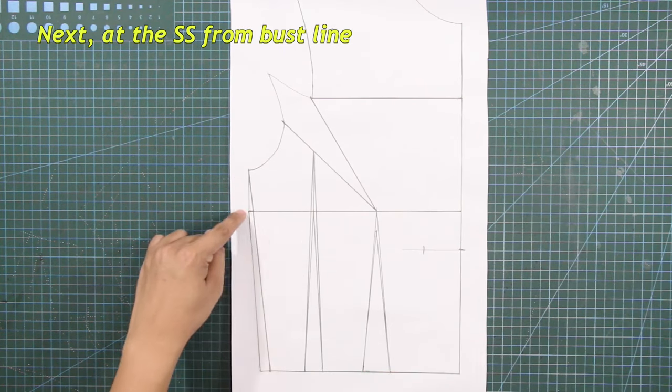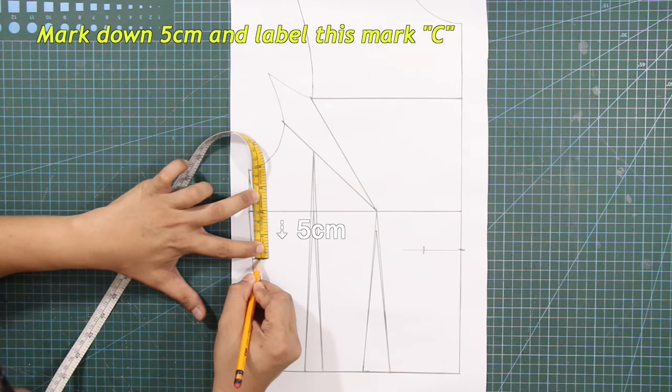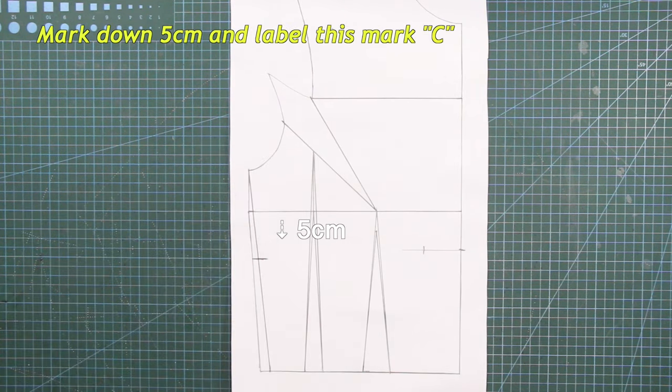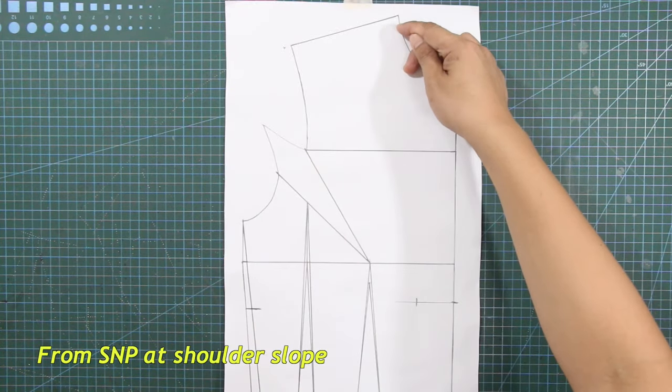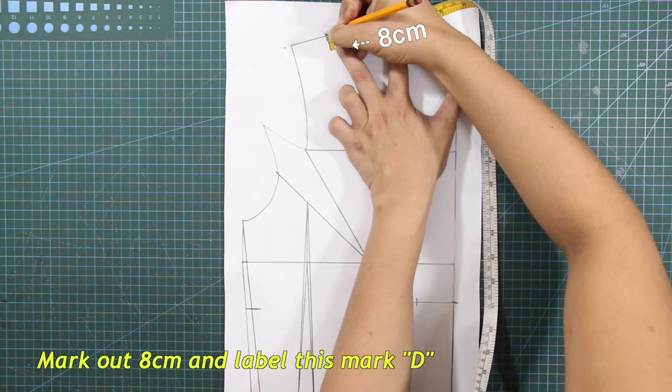Next, at the side seam from the bust line, mark down 5 cm and label this mark C. Next, from shoulder neck point at shoulder slope, mark out 8 cm and label this mark D.